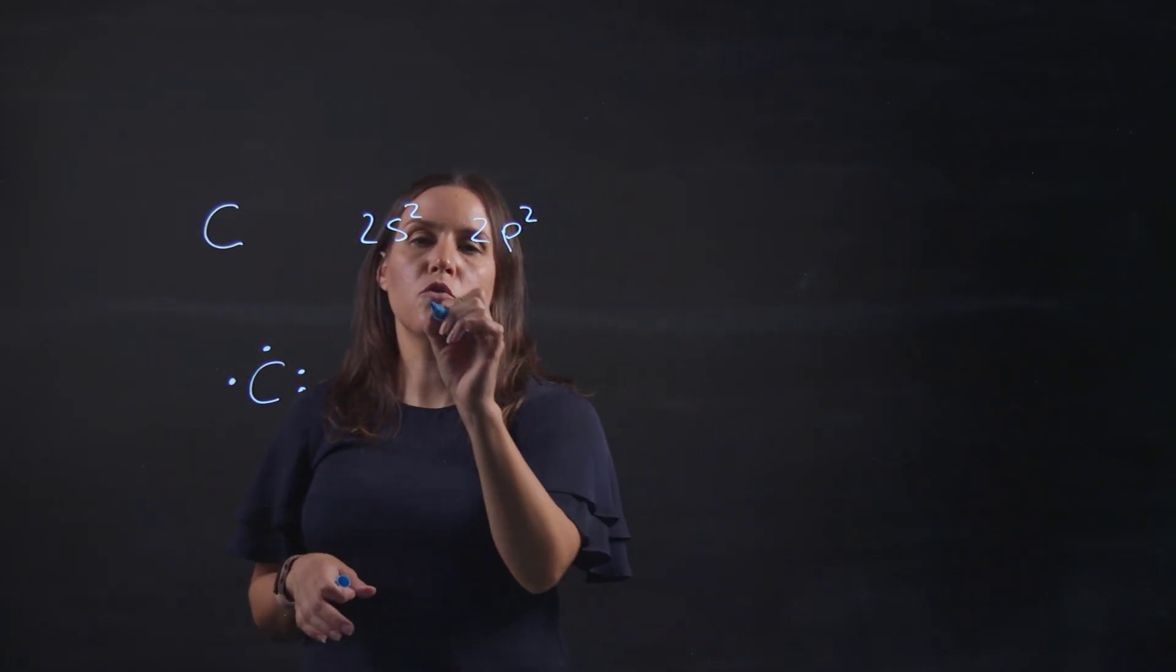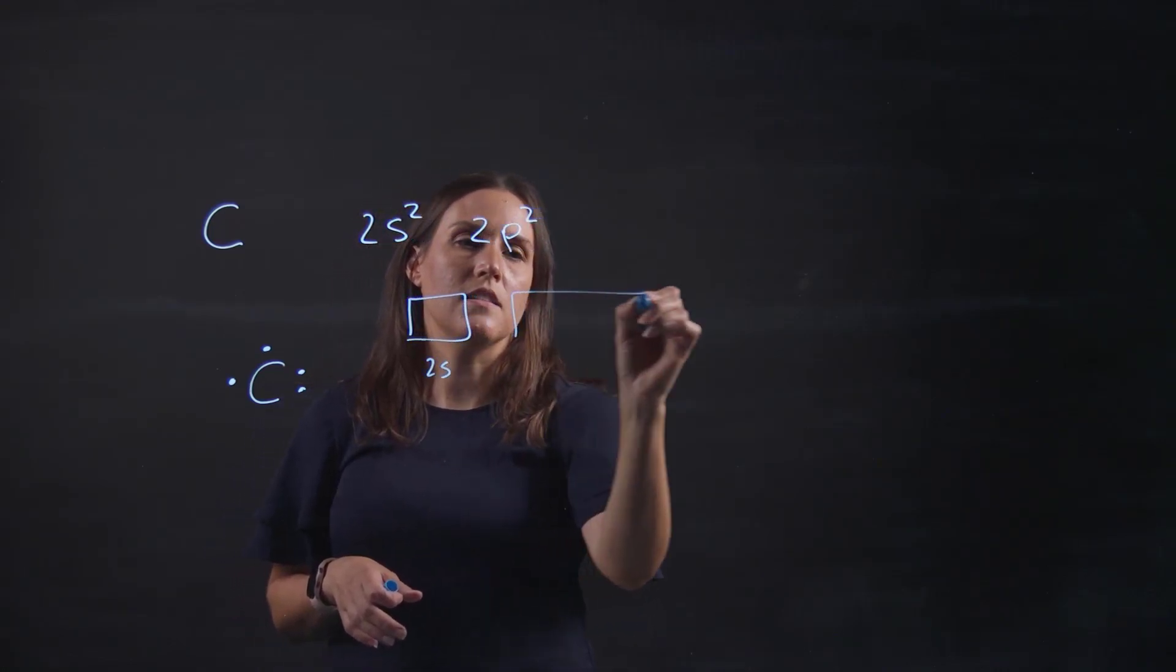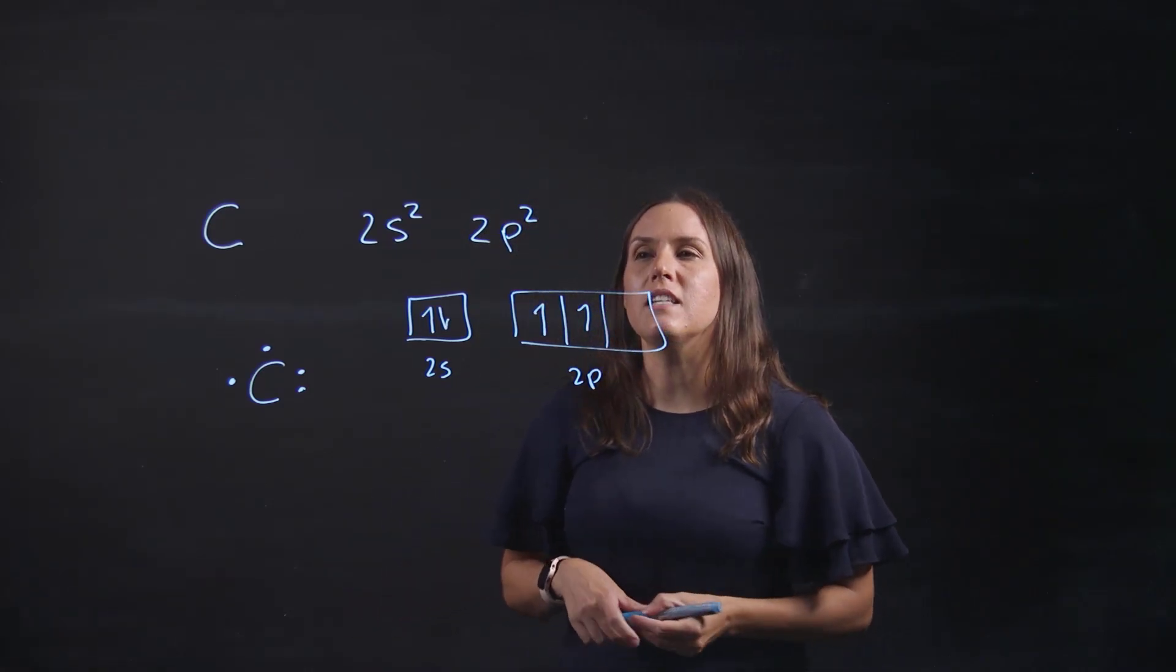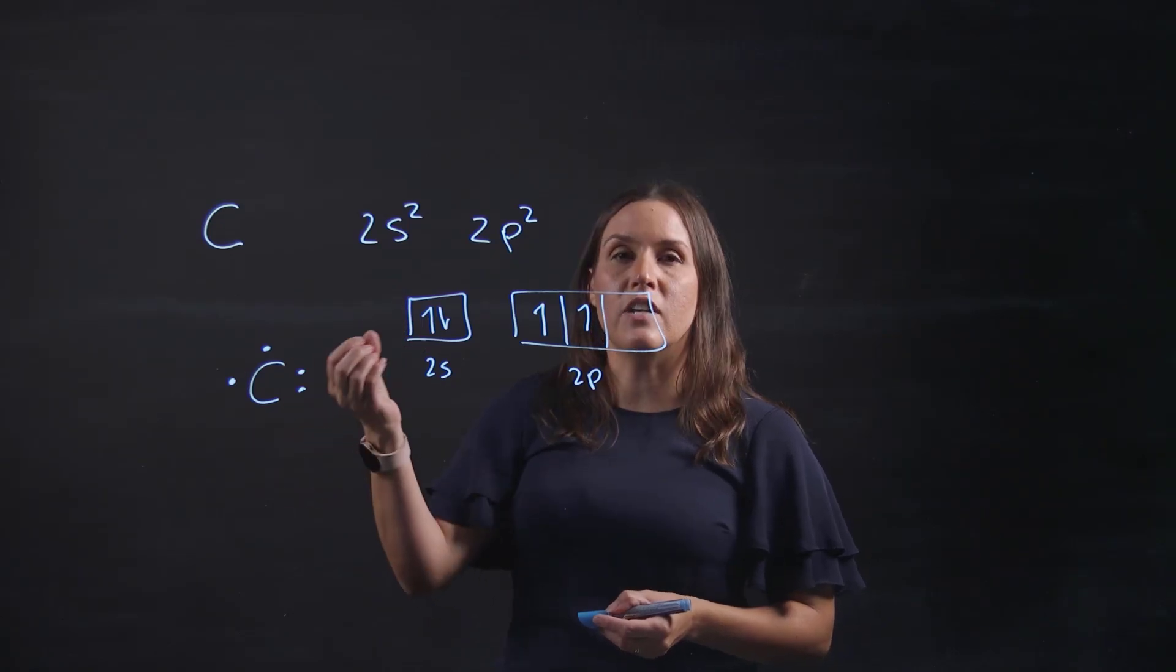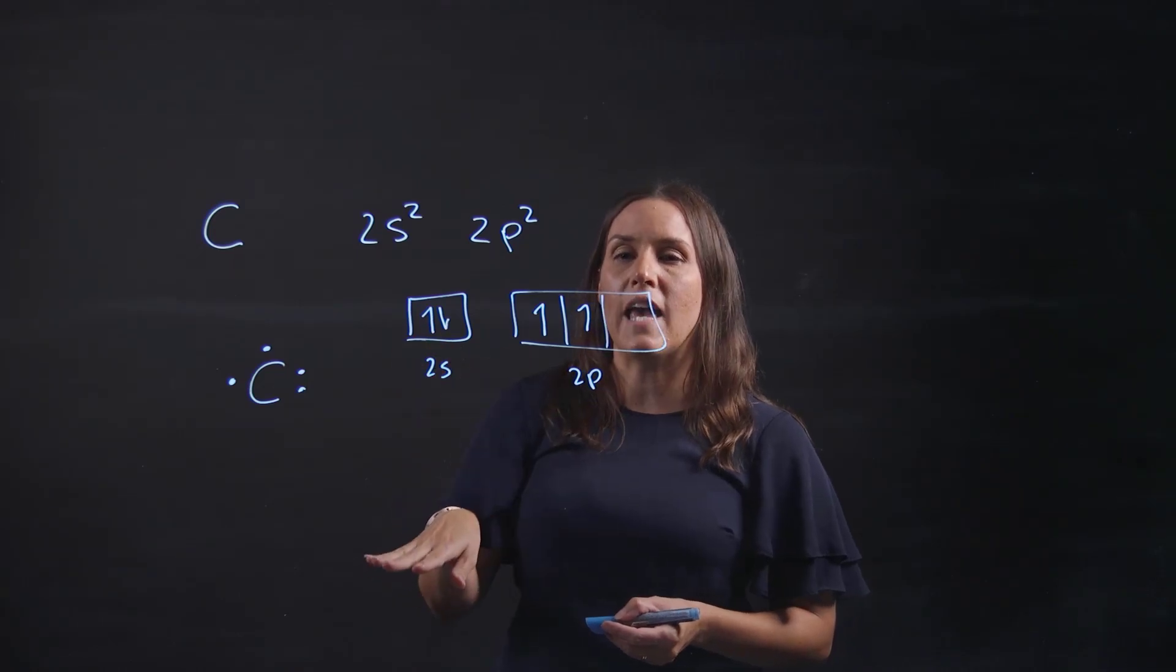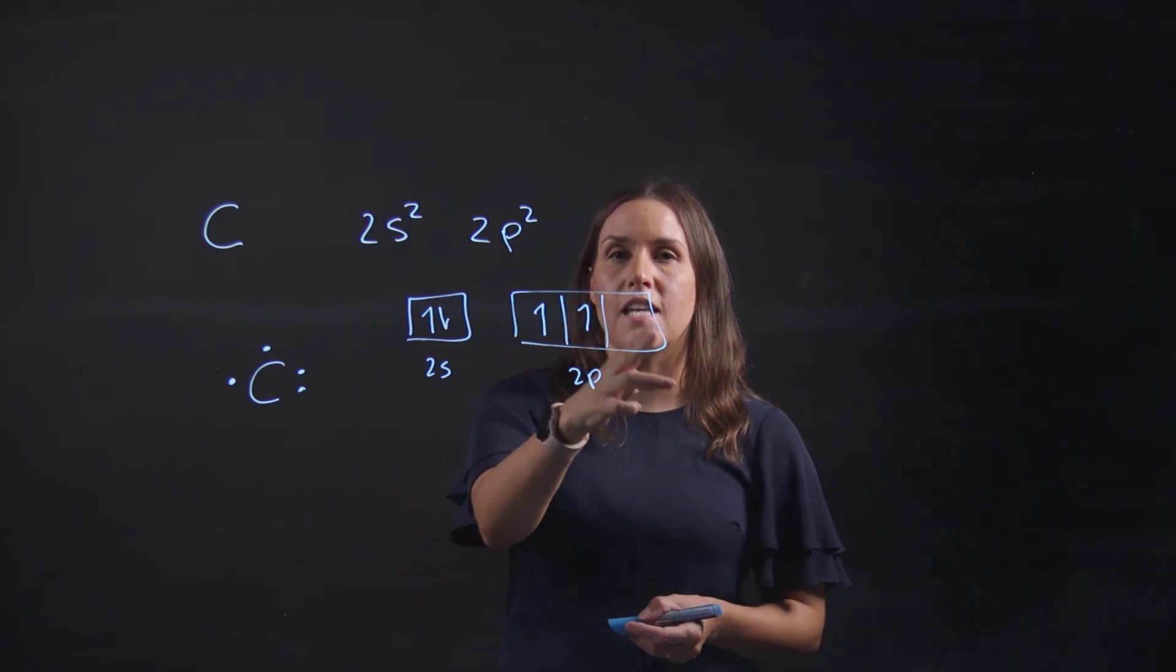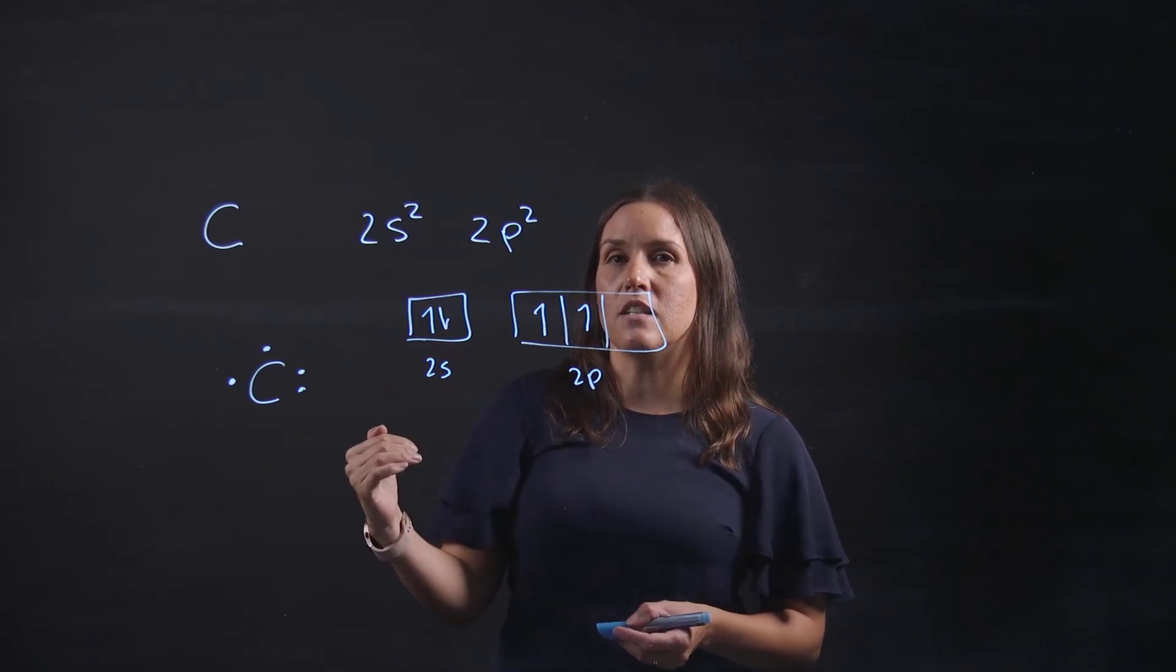Drawing that out into the boxes, this is our 2s and this is our 2p. So we'd have one, two, one, two. You can see that each of these electrons are in quite a different environment. They've got different energy levels associated with them. These 2s electrons will be in a lower energy state than these degenerate 2p orbitals. Remember degenerate means they've all got the same energy. All these 2p's are equal but these 2s sit in a lower energy level.